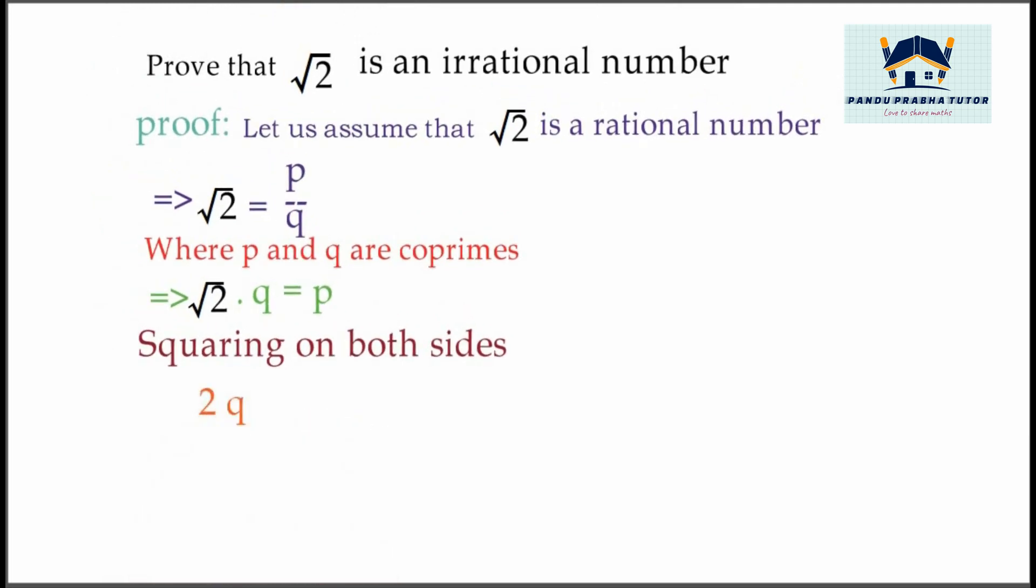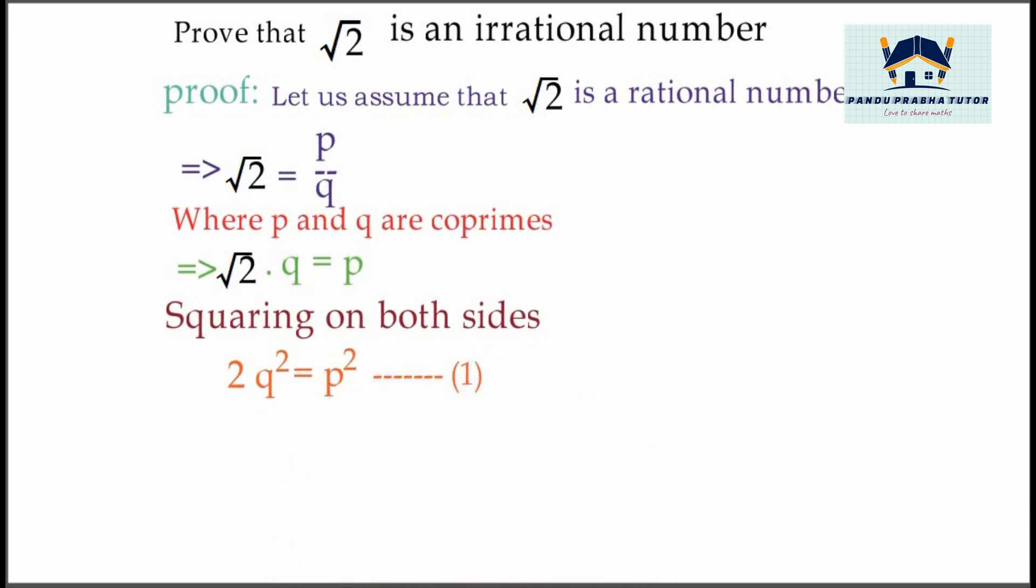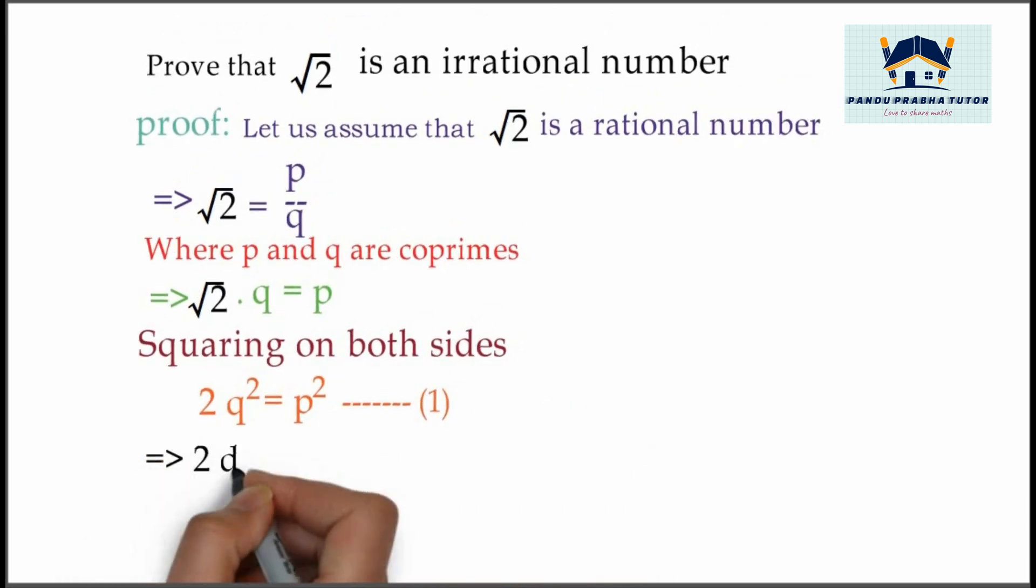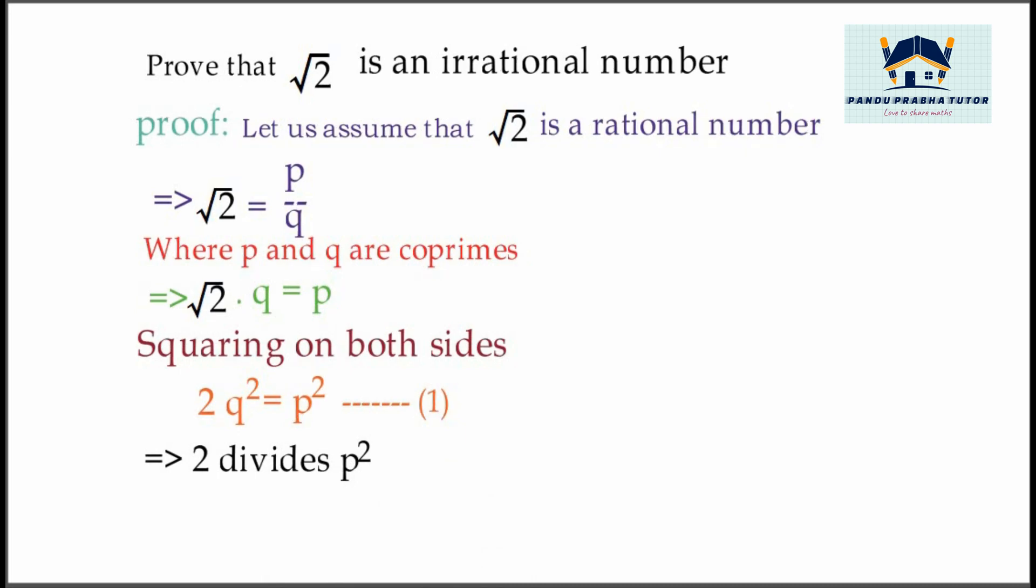The root gets cancelled. √2 squared becomes 2, so 2q² = p². Call this equation number 1. This implies 2 divides p², which implies 2 divides p.